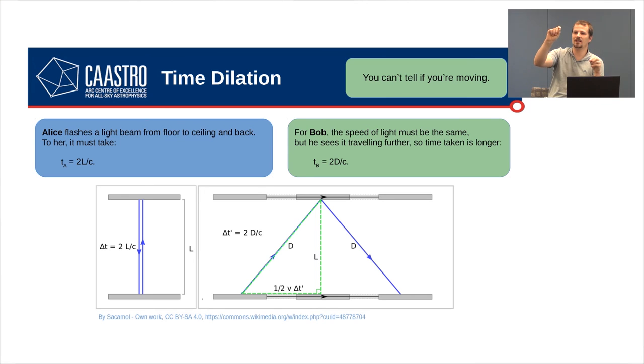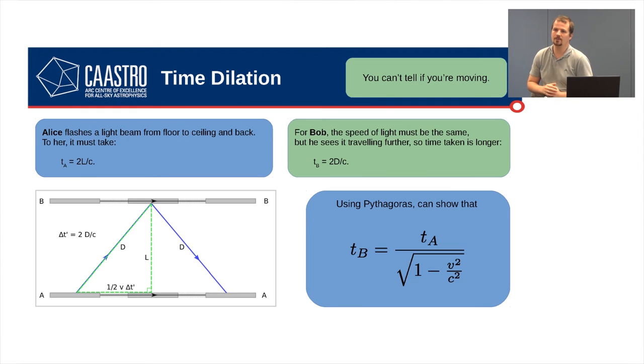The time it takes must be 2D on C. And we can measure that length D just using Pythagoras' theorem, which you should all know. Just using that theorem, and you should be able to do this yourself, you can show that the time that Bob measures is the same as the time that Alice measures divided by this factor, square root of 1 minus V squared on C squared, where V is the speed of the train and C is the speed of light. And we call this time dilation, because that factor on the bottom is always smaller than 1. And so, TB is always greater than TA. So, Bob actually sees Alice's clock running slow. And that's time dilation.